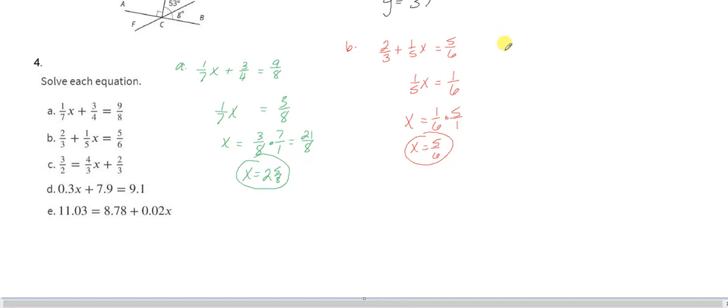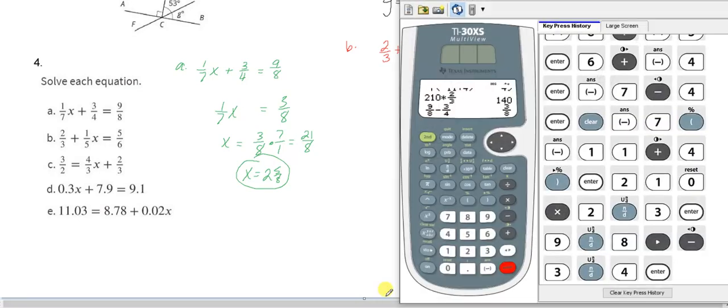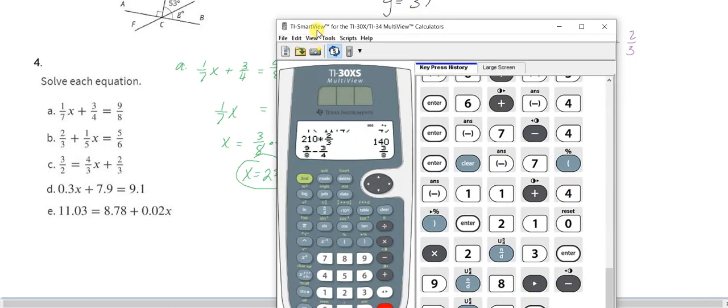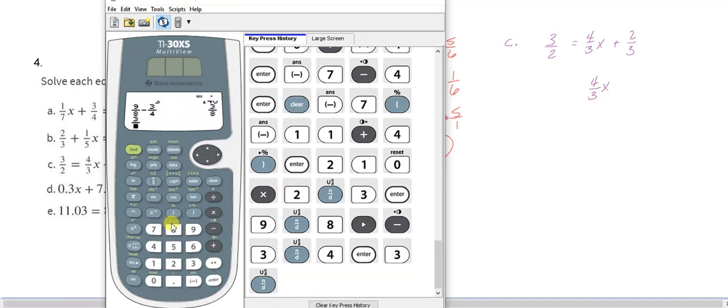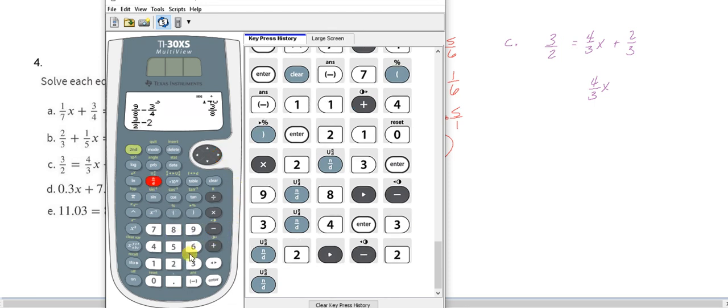Let's go on to C. 3 halves is equal to 4 thirds x plus 2 thirds. Alright, first of all we want to get rid of the 2 thirds so we subtract it from over here. So we want to do 3 halves minus 2 thirds. So we really want to get these into sixths. So think of this, well let's just save time here instead of talking through that. Let's just write it. So 3 halves, 3 over 2, and then let's subtract the 2 thirds. When you do that subtraction you get 5 sixths.